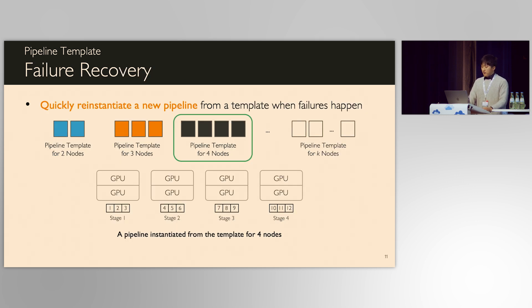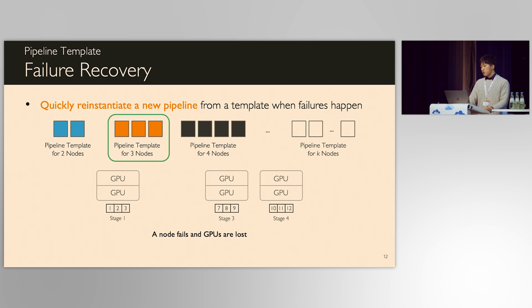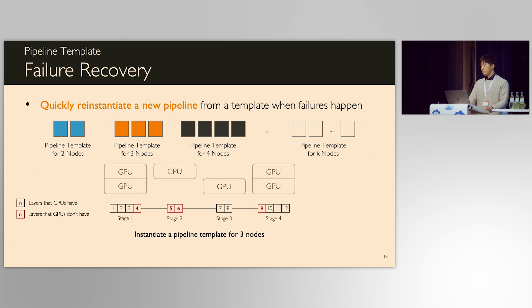When failures happen, Ooblack can provide fast recovery by simply reinstantiating another pipeline template. Here, we have a pipeline instantiated from the pipeline template for four nodes. After one node fails, we now have only three nodes. Because we have a pipeline template for three nodes, we can simply reinstantiate a new pipeline from the pipeline template for three nodes.